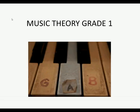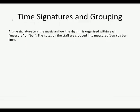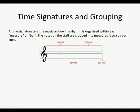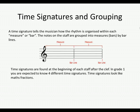Welcome to Music Theory Grade 1, Part 3: Time Signatures and Grouping. Remember that music theory is a progressive subject, so make sure you've watched Part 1 and Part 2 before this. A time signature tells a musician how the rhythm is organized within each measure or bar. The notes in the staff are grouped into measures or bars by bar lines, which divide the staff up into bars. Time signatures are found at the beginning of each staff, after the clef.